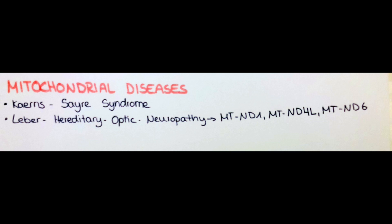Leber's hereditary optic neuropathy is the last disease I want to talk about. It involves mutations in the MTND1, MTND4L, and MTND6 genes, and it causes the degeneration of retinal ganglion cells, which in turn leads to a loss of central vision.